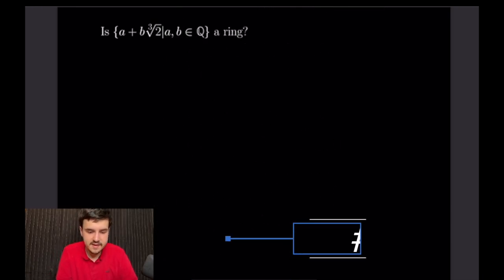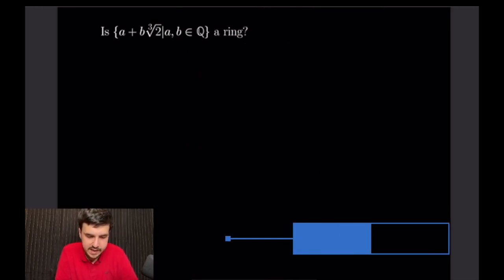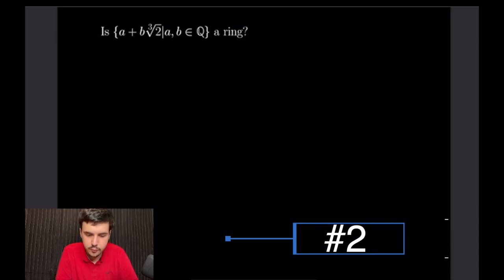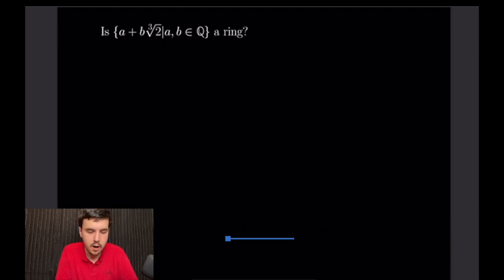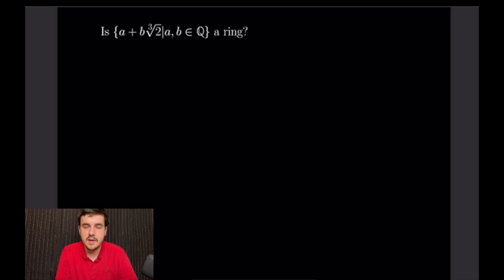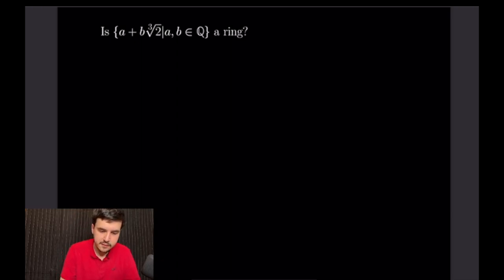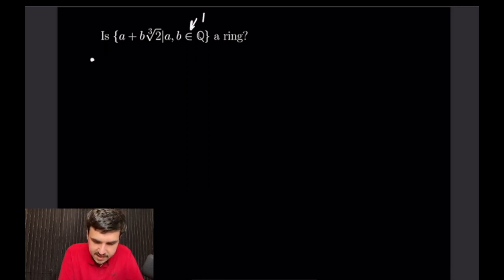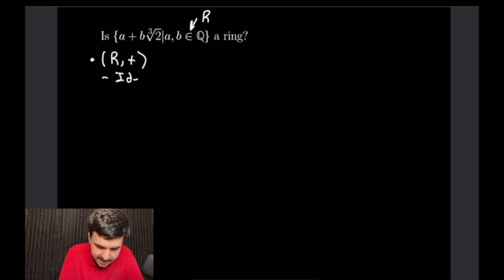Example 2: Is {a + b∛2 | a, b ∈ ℚ} a ring? We again need to verify: abelian group under addition, associativity and distributivity of multiplication, and closure under multiplication. The identity is 0 (set a=b=0) and the inverse of x is −x, both straightforward.